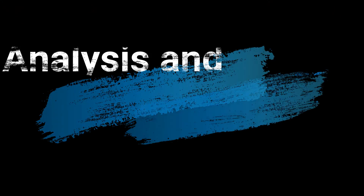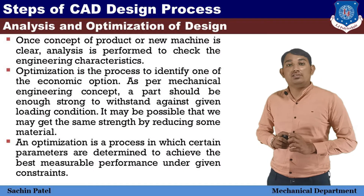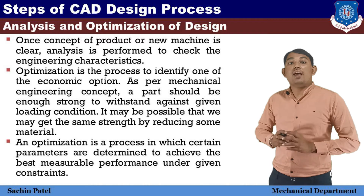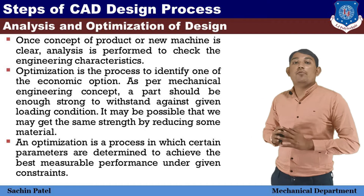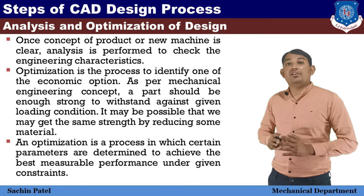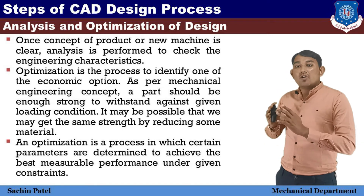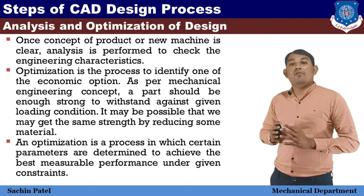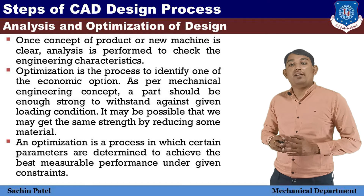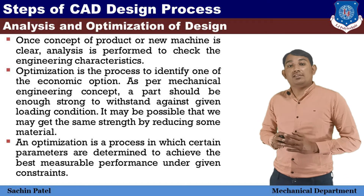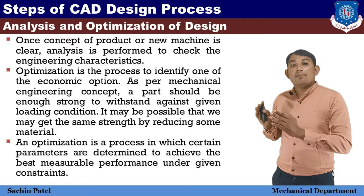The third step is Analysis and Optimization of Design — these are two separate things. Once the concept of a product or a new machine is clear, analysis is performed to check its engineering characteristics. For example, an object or a workpiece is tested under various conditions by applying parameters like force, temperature, flow measurement, etc. After analysis, we have some idea about the behavior of the system under given conditions.